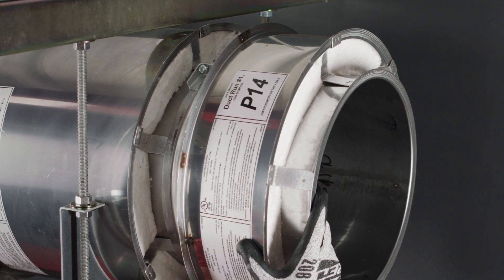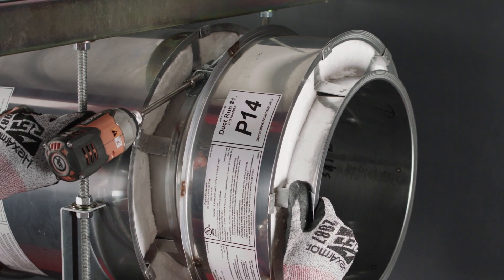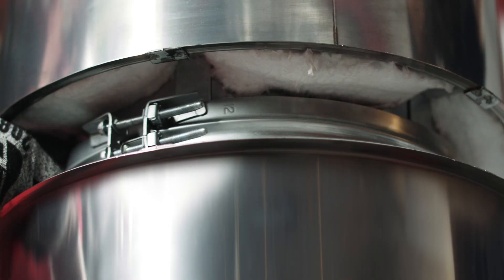While fitting both duct flanges inside the V-section, install the V-band around the duct flanges and partially tighten the screws.